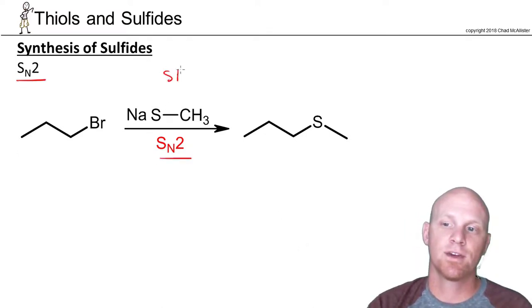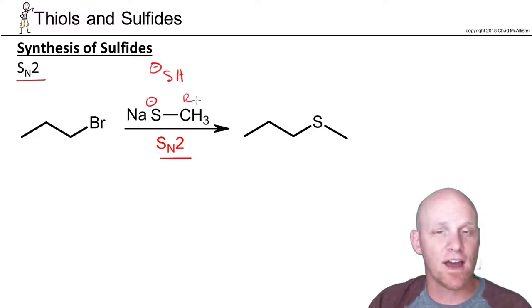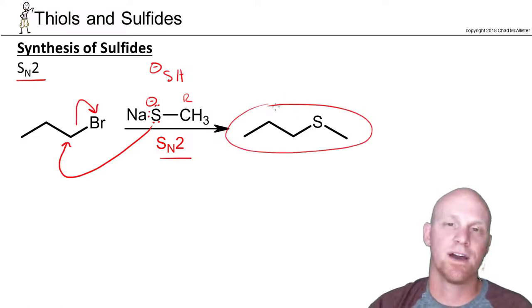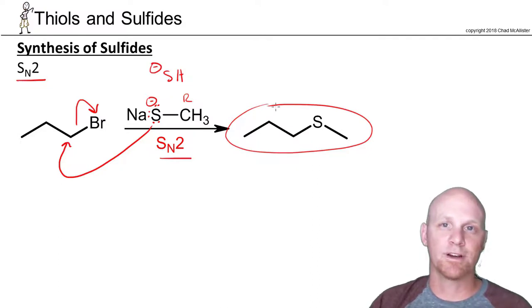Instead of using SH-, here we're going to use S-R-. And that R doesn't have to be a methyl, it can be a variety of things. But we're straight up going to do SN2. It's a nice strong nucleophile, kicks off the leaving group, and now you've got your sulfide. So complete review, I'm not going to spend a lot of time here.